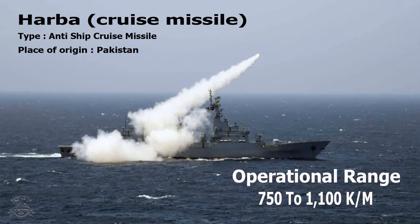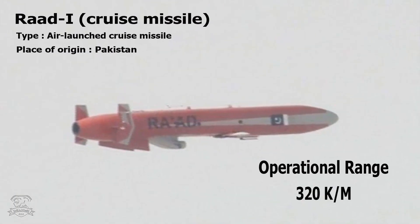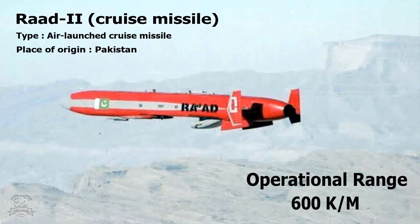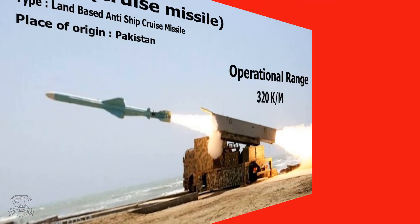Ra'ad Cruise Missile: Type – Air-Launched Cruise Missile, Place of Origin – Pakistan, Operational Range – 320 km. Ra'ad-2 Cruise Missile: Type – Air-Launched Cruise Missile, Place of Origin – Pakistan, Operational Range – 600 km.